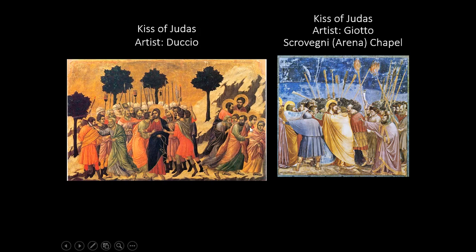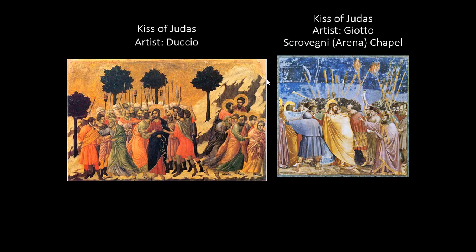When you look at Duccio's work and compare it with Giotto, we can see a very different use of color. You've got this gold in Duccio, which is highly typical of the Italo-Byzantine style — a carryover from the Byzantine style that emerges in art history in the 6th century. All this gold is meant to convey an abstract spiritual space; it removes the scene from the realm of man, the natural world.